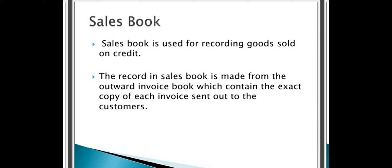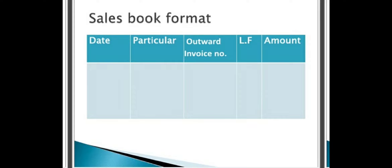The record in the sales book is made from the outward invoice book, which contains the exact copy of each invoice sent out to customers. The format of the sales book is the same as the purchase book — date, particulars, outward invoice number, ledger folio, and amount. In the date column we post the date, in the particulars column we write details regarding the sales made, the outward invoice number is added, the ledger folio number records which page the transaction will be in the secondary book, and in the amount column we post the amount.